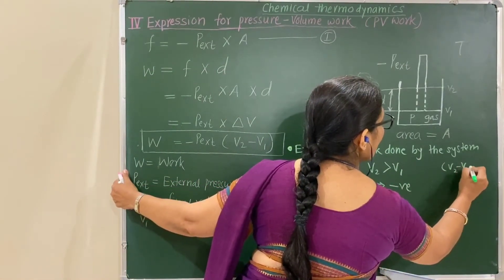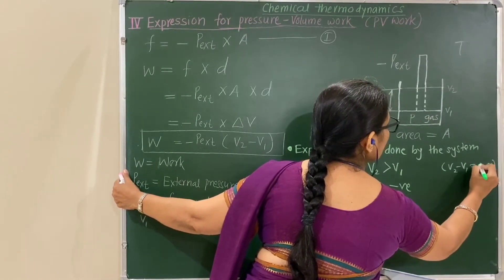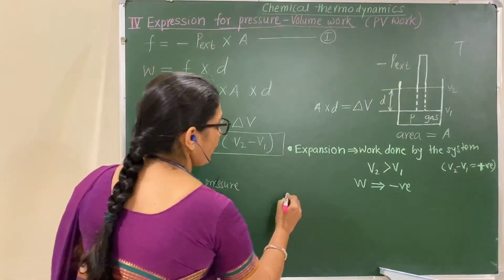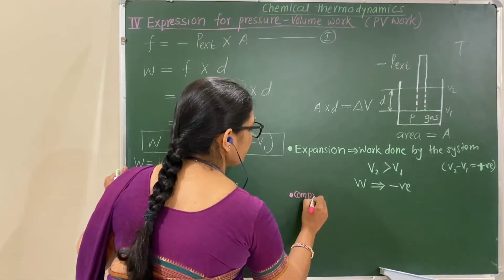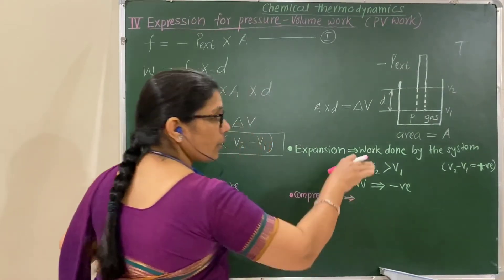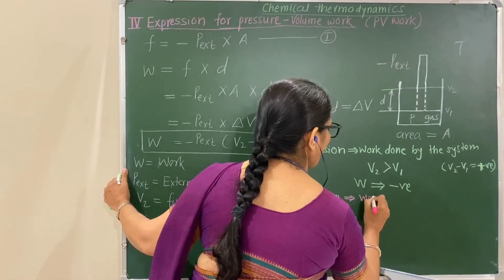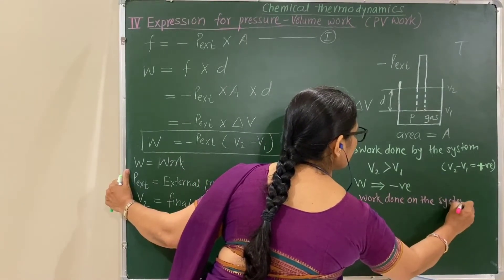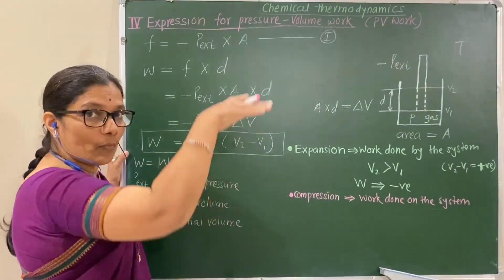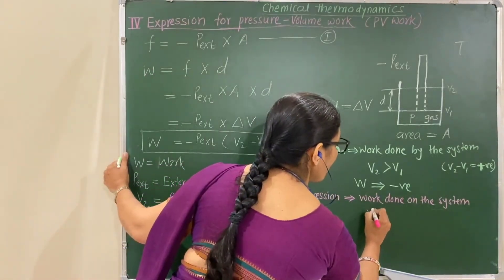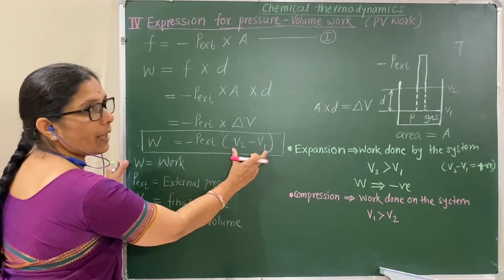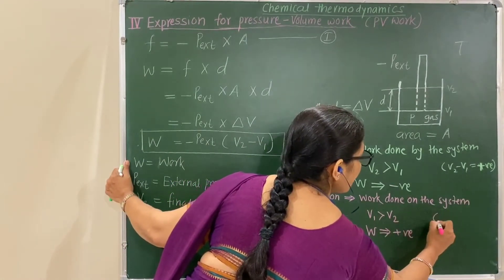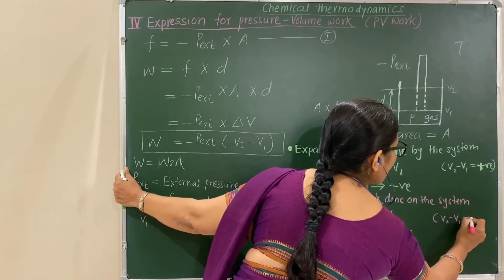In the formula, V2 minus V1 is positive for expansion. Now suppose the gas is compressed. For compression, work is done on the system. In that case, V1 is greater than V2. If V1 is greater than V2, then (V2 − V1) becomes negative, and with the negative sign outside, W becomes positive. That is, V2 minus V1 is negative for compression.